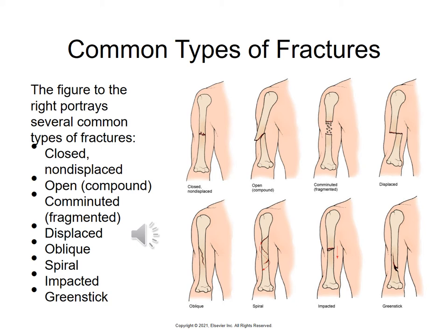A completely displaced fracture is where the bone does not protrude outside the skin, but the bone is not in alignment. An oblique fracture has a crack going diagonally. A spiral fracture has a crack that goes around and around the bone. Then there is an impacted fracture, where the bone has been forced downward, and a greenstick fracture.